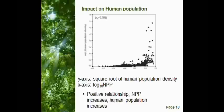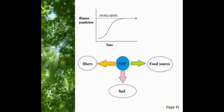So what is the implication of this on the human population? A graph from a previous study in Australia shows the relationship between NPP and human population density, with the y-axis as the square root of human population density and the x-axis as the log base 10 NPP. It was determined that as NPP increases, human population density increases too. Because of this correlation, NPP affects the carrying capacity of the human population. Carrying capacity is the maximum number of species that a habitat can support, and global NPP constrains the carrying capacity of the human population, as it acts as the food source, fibers, and fuel for humans.